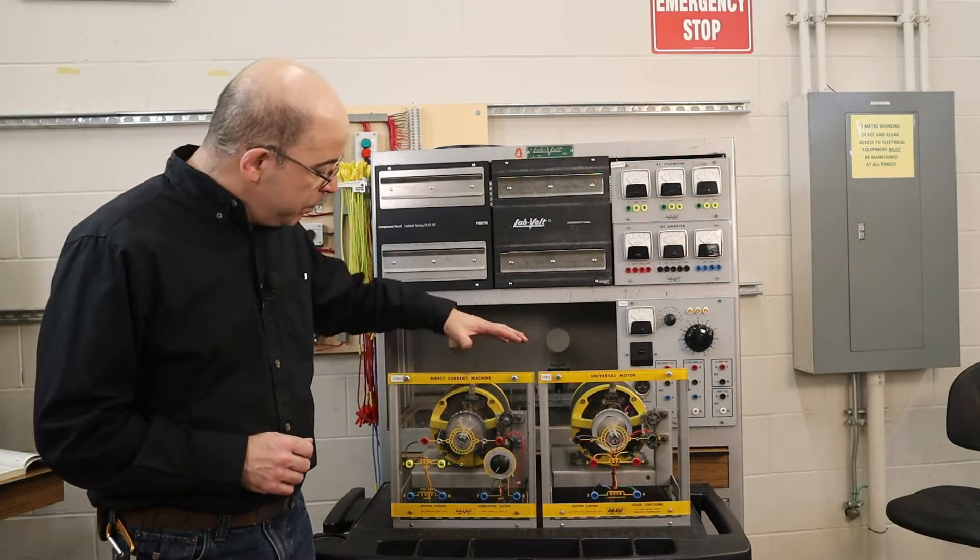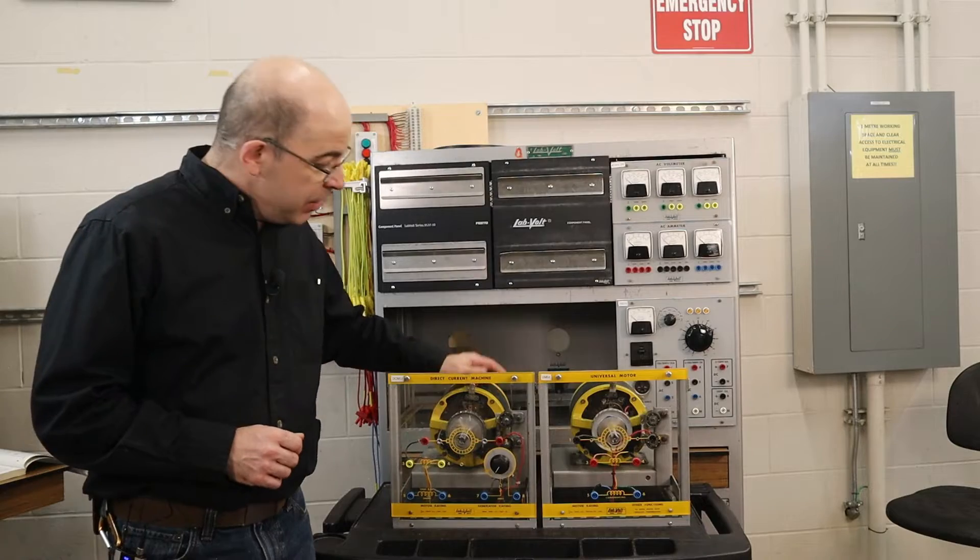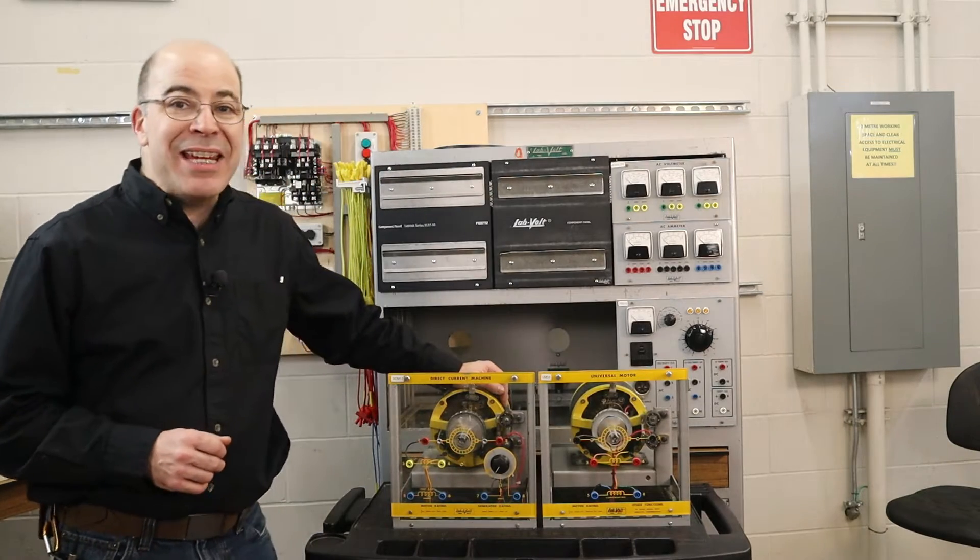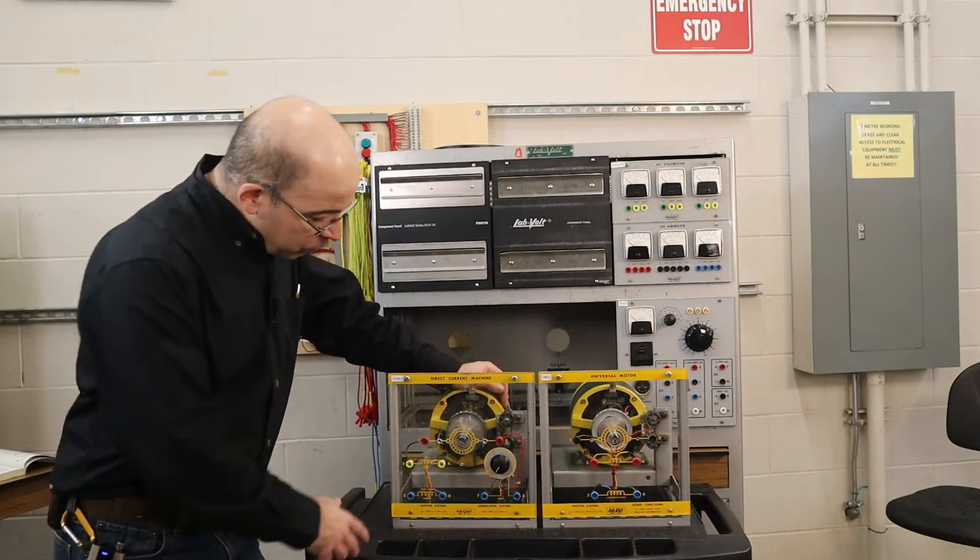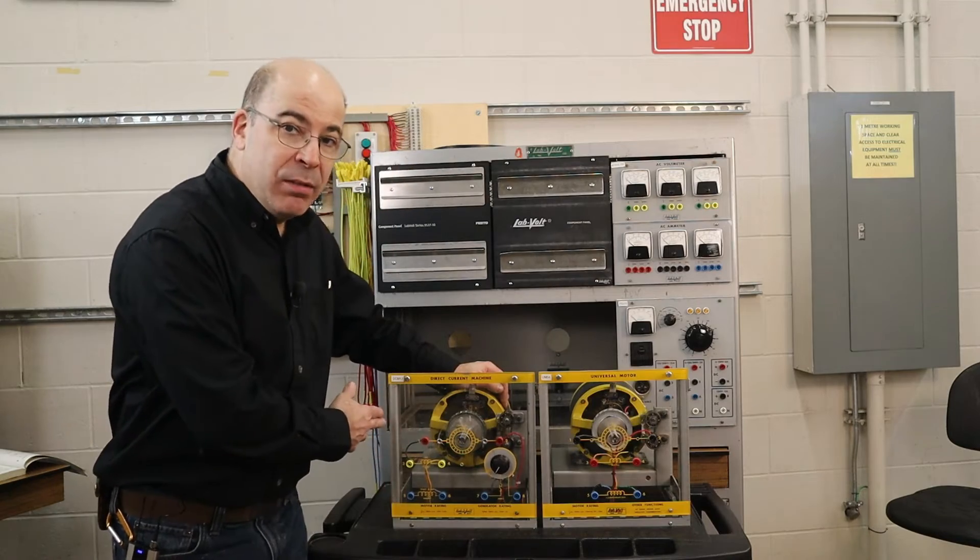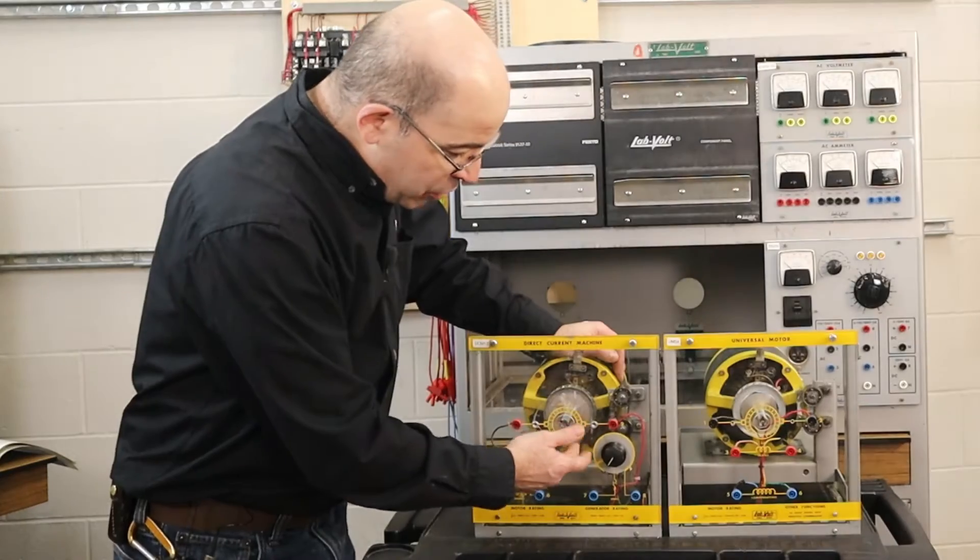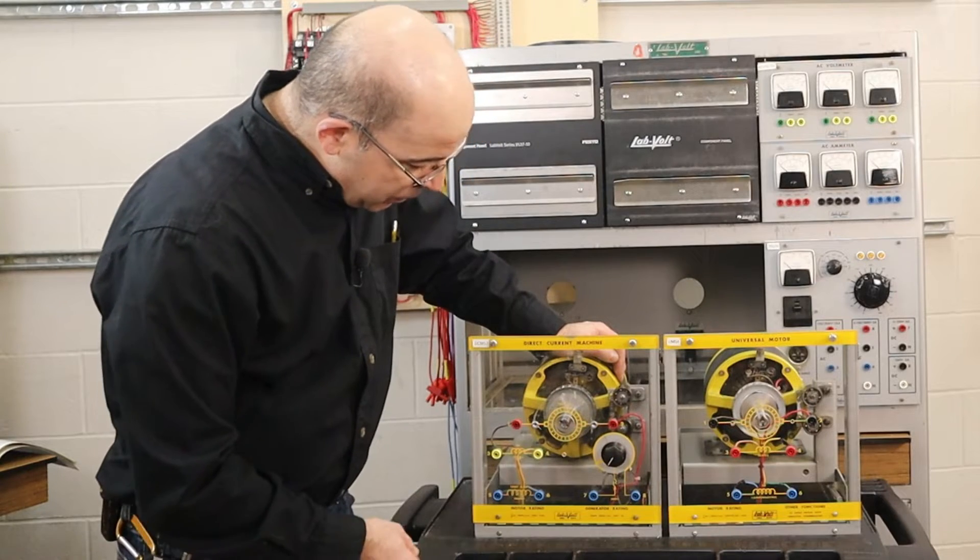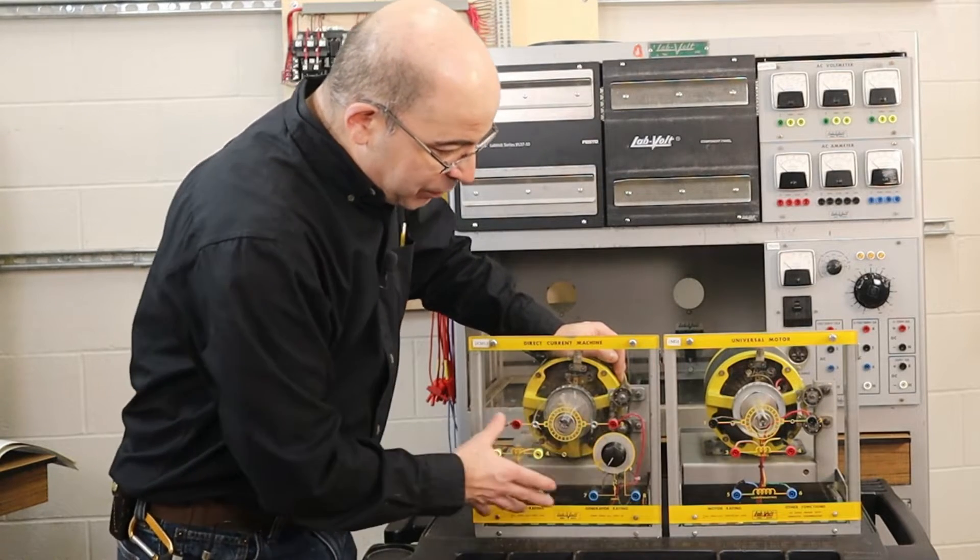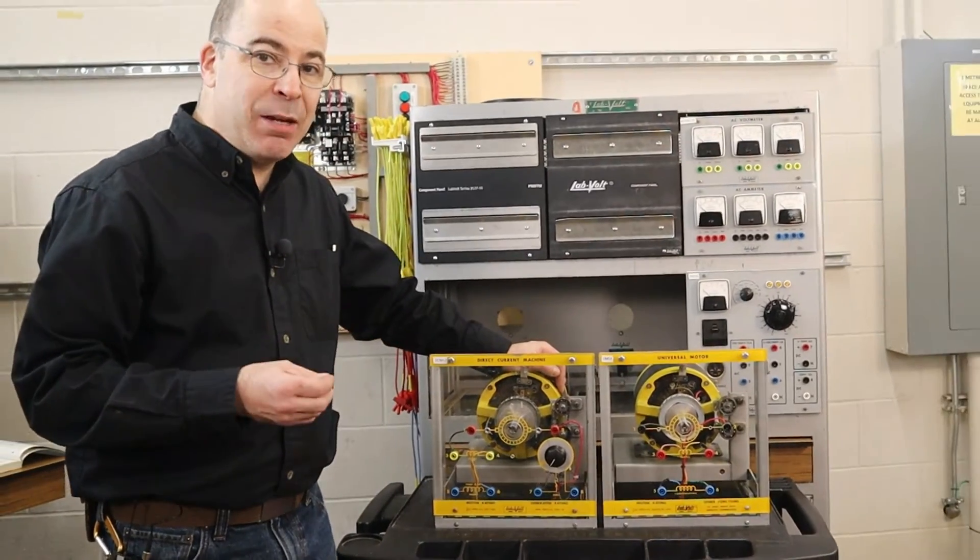Now what I've done is I've actually put a DC machine right beside the AC machine. Looking at the cover plate we can see there's some distinct differences. The DC machine has a rheostat, but other than the colors they're almost the exact same.